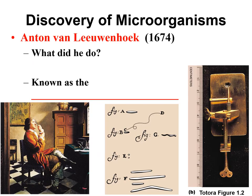Our next scientist is Anton van Leeuwenhoek. He was a Dutch scientist working in the 1600s as well. His main job was selling fabric to make men's clothing, but on the side he really liked to make little microscopes. He was very good at making the glass lenses. These microscopes had a fine tip where you would put the specimen.